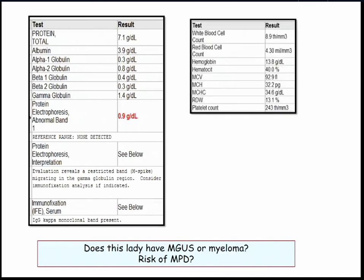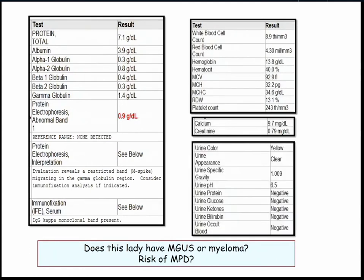So what am I going to do? I'm going to get a CBC — normal. I get a calcium and creatinine — normal. Get a UA — she's not spilling any protein. So does she have MGUS or myeloma? She has MGUS, and we'll just follow it serially. She asks: am I going to get myeloma? Yeah, 1% per year.